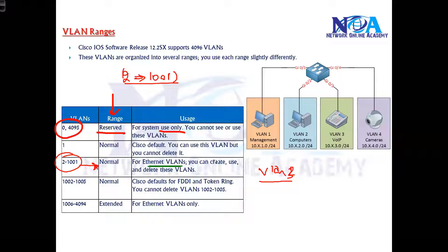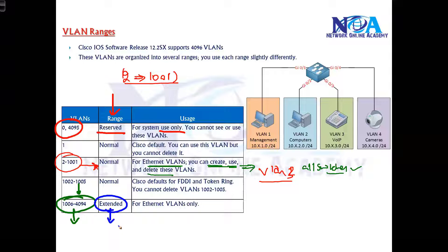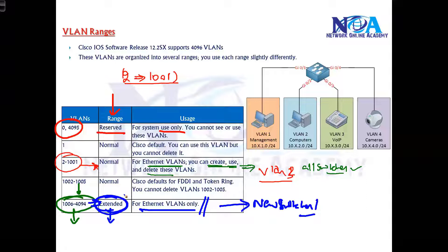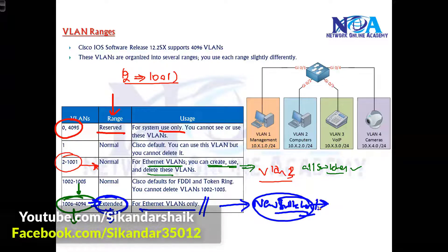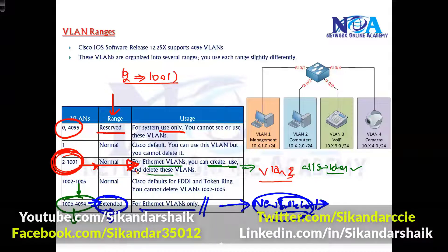VLANs 2 to 1001 are generally reserved for Ethernet VLANs — you can create, use, delete, and modify them. This range is supported on all switches. The VLAN range above 1005, from 1006 to 4094, is called the extended VLAN range. Extended VLANs are also used for Ethernet but are supported mainly on newer and high-end platforms. The most common range used in practice is 2 to 1001, which is supported on all platforms.